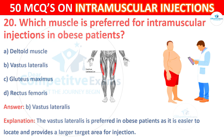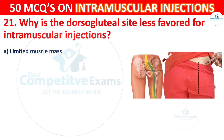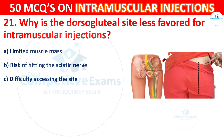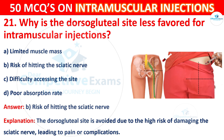Question 21: Why is the dorsogluteal site less favoured for intramuscular injection? Options are: limited muscle mass, risk of hitting the sciatic nerve, difficulty accessing the site, or poor absorption rate. The correct answer is B, risk of hitting the sciatic nerve. The dorsogluteal site is avoided due to the high risk of damaging the sciatic nerve, leading to pain or complications.